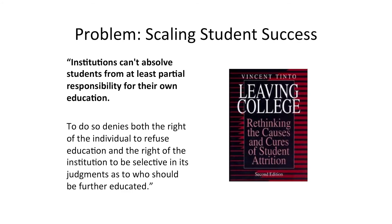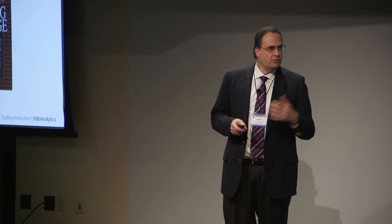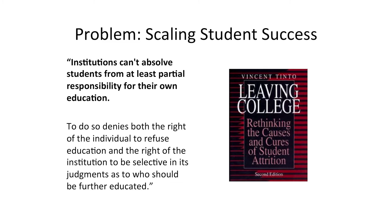First of all, an idea. One of the things I have been concerned about when I think about student success is that it's almost always completely about what the institution is going to do to save its students. When I was reading around in the literature, I came across Vincent Tinto, who is largely regarded as the Dean of Student Success, and this quote got my attention: institutions can't absolve students from responsibility for their own learning. What would that actually look like?